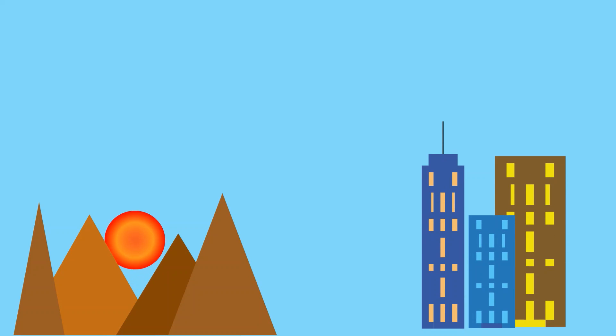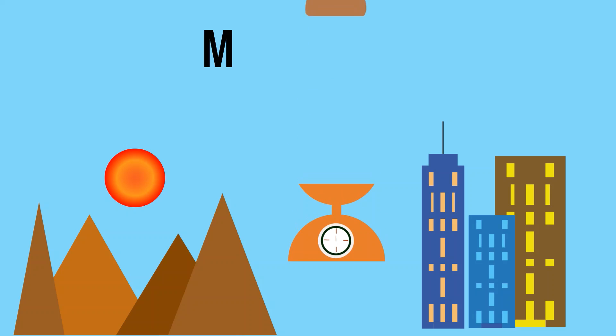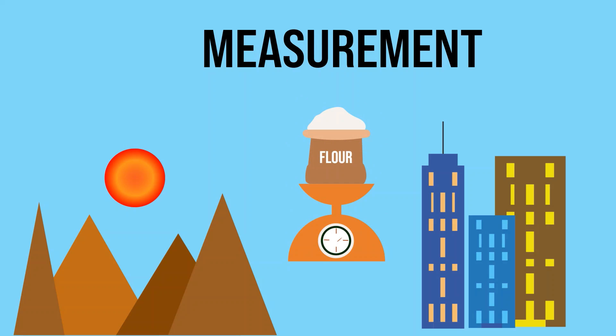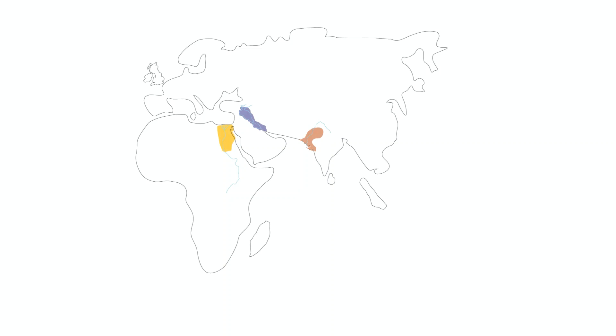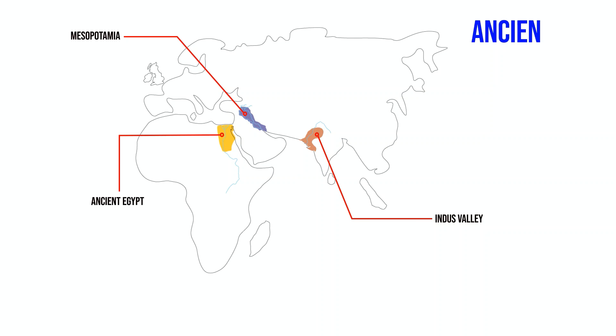To make sense of the physical world, we need to have the notion of measurement, and it lies at the heart of modern science. Humankind has attempted to measure length, mass, and time since early river civilizations.